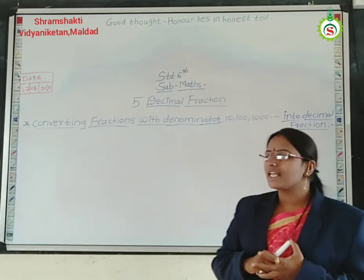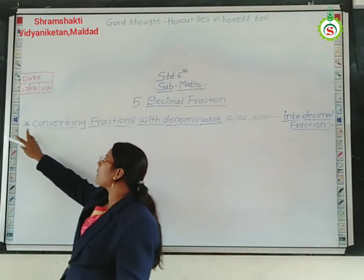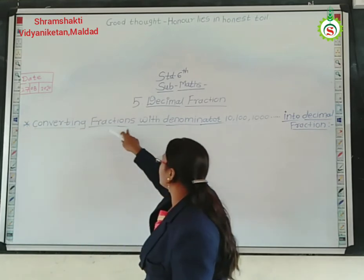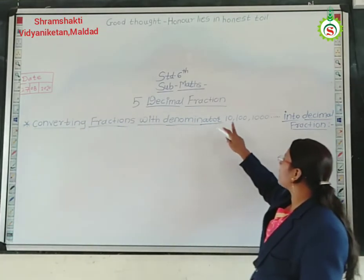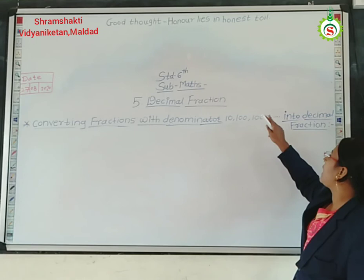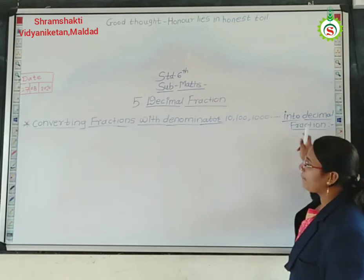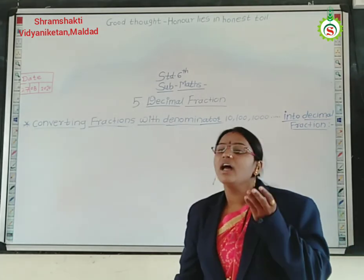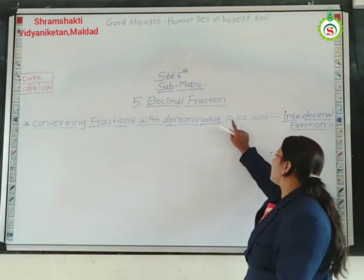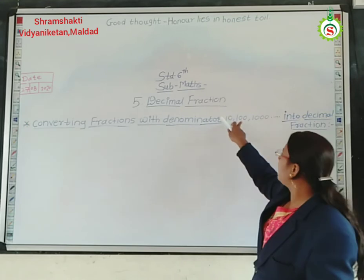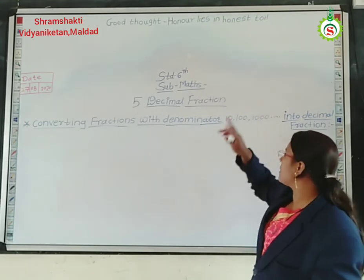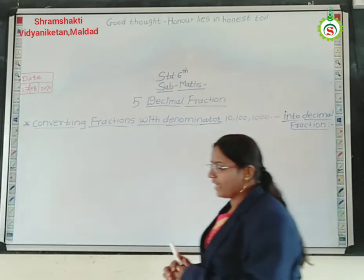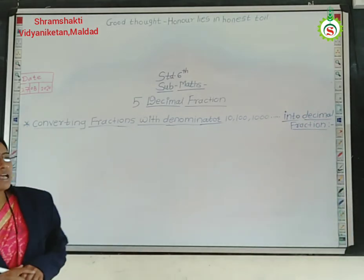Now in today's video, we are going to see the second and third points — that is, converting fractions with denominators 10, 100, and 1000 into decimal fractions. Means, we have to convert fractions that have denominators like 10, 100, or 1000 into decimal fractions. So we will take some examples.